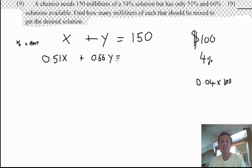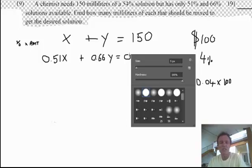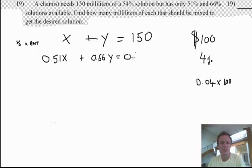Equals, what is the kind of total percentage times the amount? Well, I know the amount is 150, and the percentage I want to get to is 54%. Again, somewhere in between 51 and 66. When you mix solutions, you're kind of making one stronger, the other weaker. You get somewhere in between. So 0.54, there's the percentage. Now, I do know the amount. It's 150. So there we go.